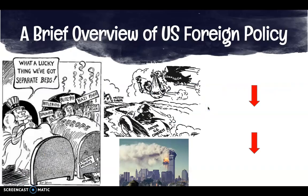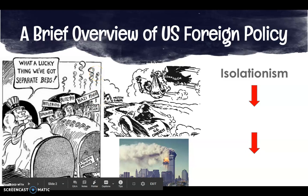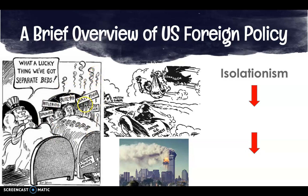A brief overview of U.S. foreign policy — we've got to dig into some history here. Until the 20th century, the United States was generally guided by what we consider to be isolationism — the philosophy that we should avoid entangling alliances, in the words of George Washington, whenever possible. We should avoid getting involved in conflicts, and that can be seen from this cartoon from World War II. Europe had all of these issues going on — Nazi aggression, a lot of totalitarian governments springing up causing problems — and the United States took that isolationist approach.